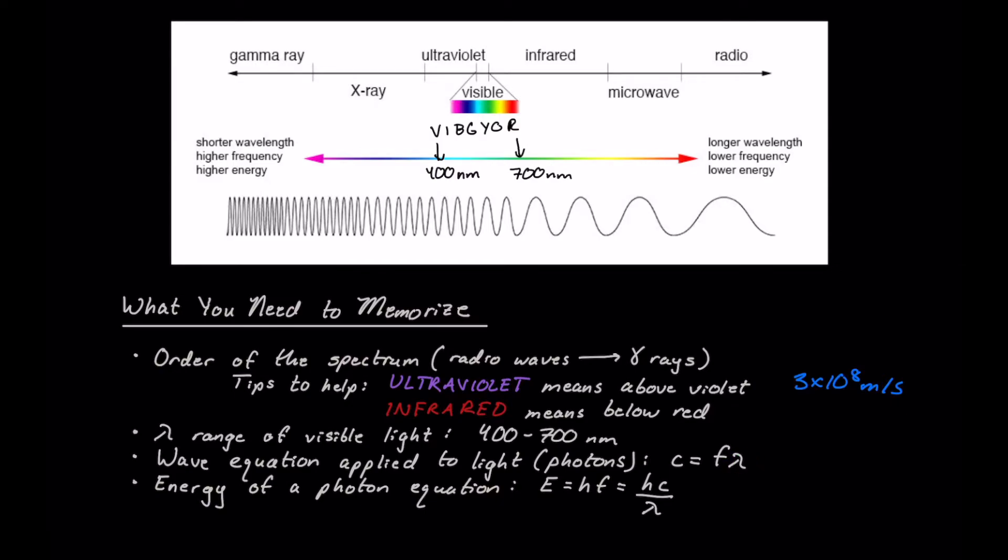And finally, another associated equation we need to memorize is energy of a photon, which is equivalent to H, which is Planck's constant, which is going to be about 6.626 times 10 to the negative 34th joules times second, something you should have memorized as well, times frequency.